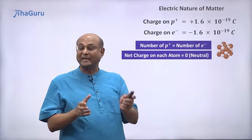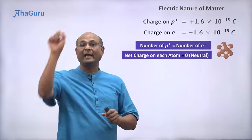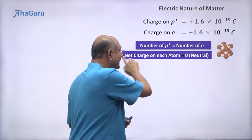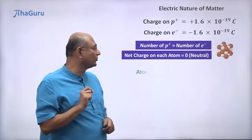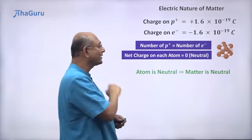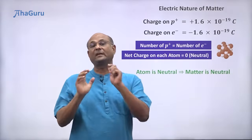That doesn't mean the atom has no charge. It has a positively charged nucleus and it has negatively charged electrons roaming around. But if you take the net charge on the atom, it is zero. So we say the atom is neutral. Because atoms are neutral, matter is made up of atoms. So matter is in general neutral.